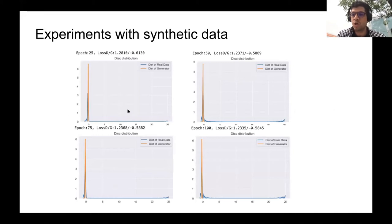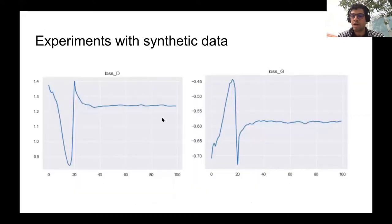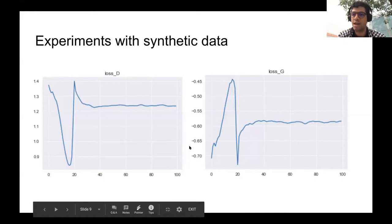So here in these charts, we show the evolution of the generator distribution with respect to the real data distribution over the number of epochs. As we can see, as the number of epochs increases, the distribution of the generator gets better and better at fitting the true distribution. We also see that the loss function for the discriminator and generator basically converge to a stationary value, showing that the minimax game has reached stationary points in around 100 or even fewer epochs.